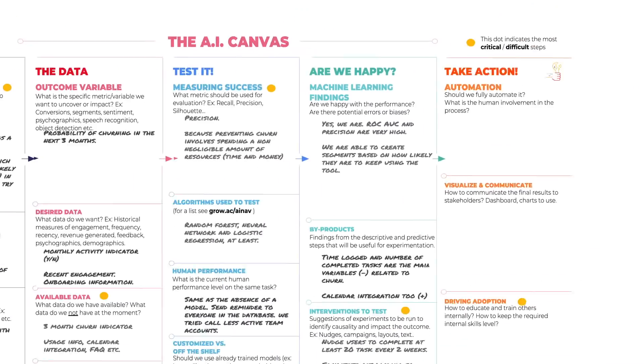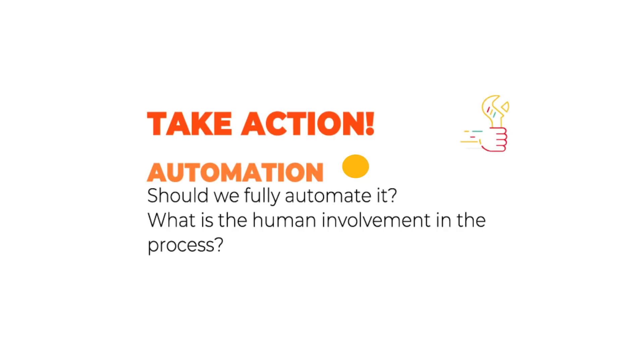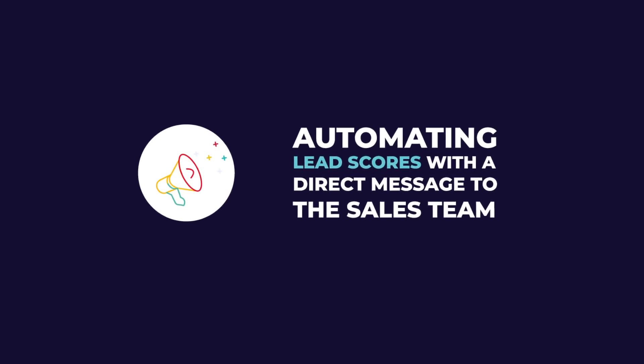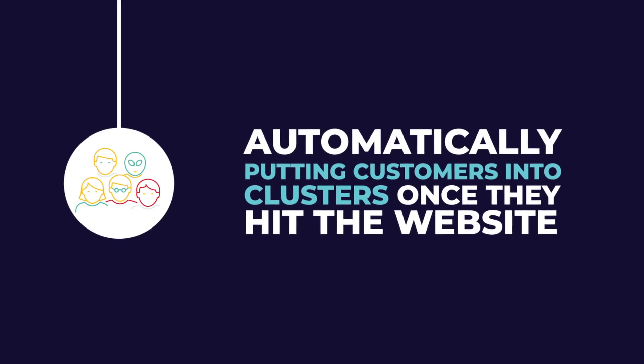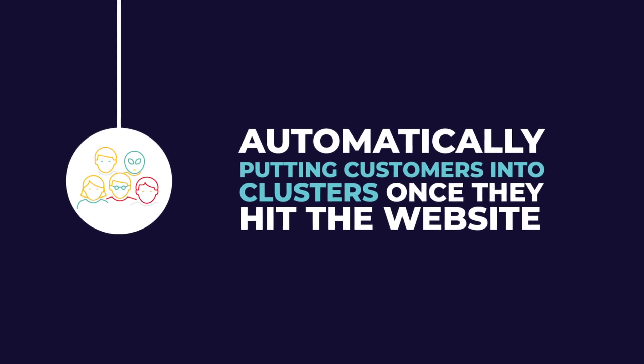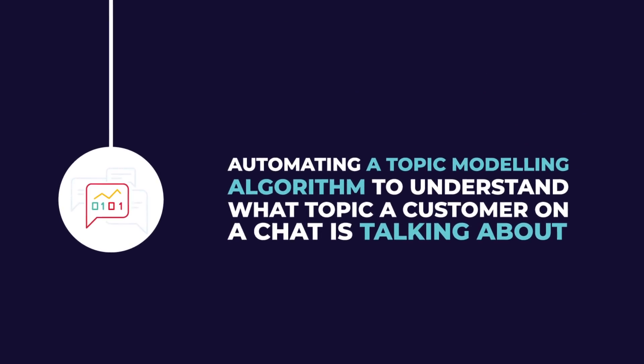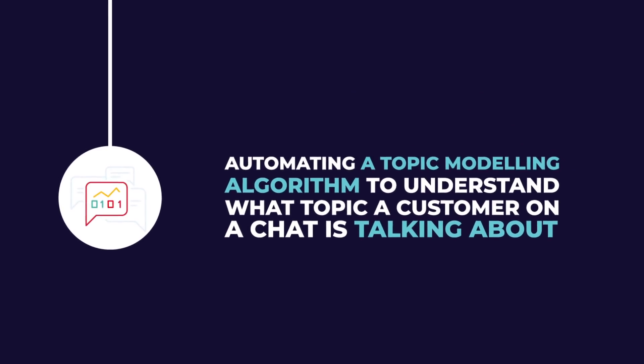Now let's move on to the fifth column — the action part. In the first section, it's about automation. If we're happy with the model, do we actually want to automate? This can be automating lead scores with a direct message to the sales team, automatically putting customers into clusters once they hit the website, automating a recommendation engine, or automating your topic modeling algorithm to understand what topic a customer on a chat is talking about. This is the part where all your hard work and research can finally be duplicated, systemized, and automated.